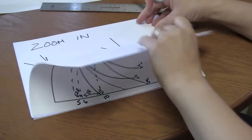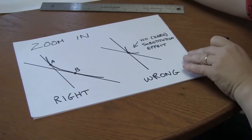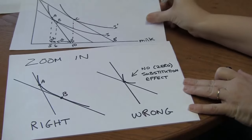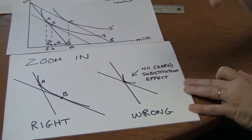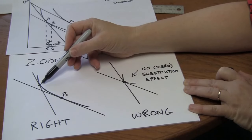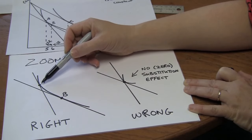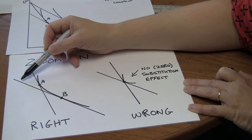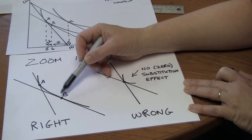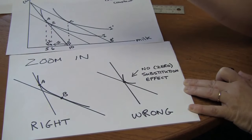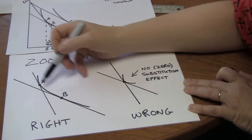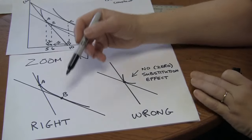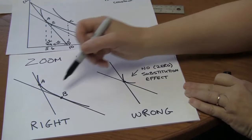One thing to bear in mind when you're doing these, and this is just zooming in, if you think of these points here, A and B, if you zoomed in, the right way to do them would be something like this. That's the right way to draw it.